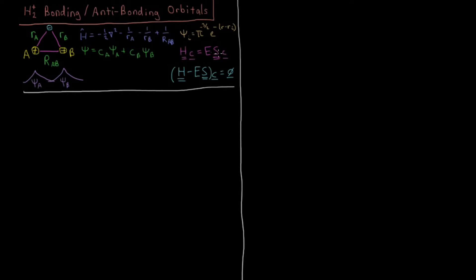We use the linear variational method, which solves the equation HC = ESC, H being the Hamiltonian matrix, S the overlap matrix, and C the coefficient vector for each state. Since we have two basis functions, we get a 2×2 Hamiltonian, a 2×2 S matrix, two coefficients in our coefficient vector, and two different energies. We solve the secular determinant where |H − ES| = 0.